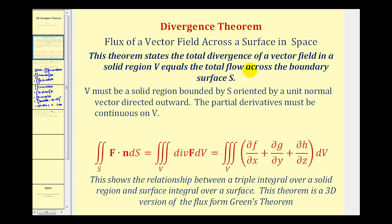The theorem states that the total divergence of a vector field in a solid region V is equal to the total flow across the boundary surface S.